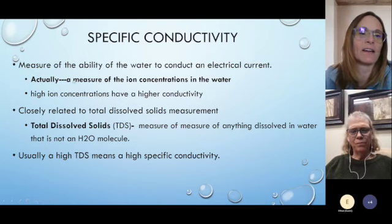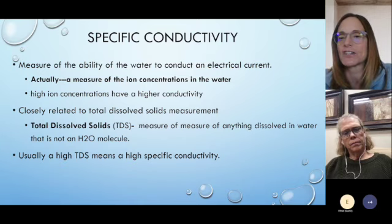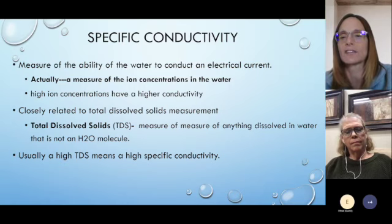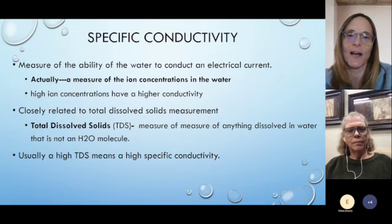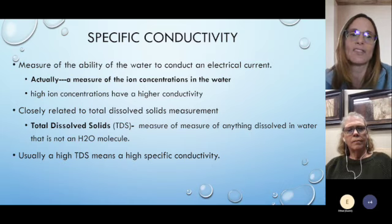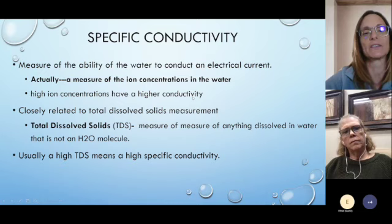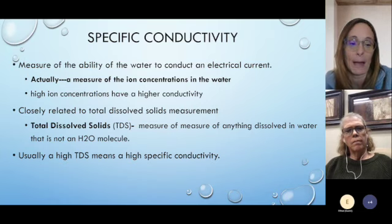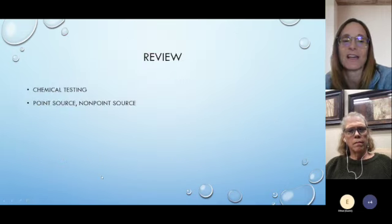Specific conductivity is a measure of the ability of water to conduct an electrical current — basically a measure of ion concentrations in the water. Pure water with just H₂O does not conduct an electrical current. It's when ions are dissolved in water that it gains the ability to conduct current. We do test for specific conductivity in our water monitoring, though it just tests whether there are ions in the water, not which specific ones. Conductivity is closely related to total dissolved solids, which measures anything in the water that's not a water molecule. A high total dissolved solids level will often mean a high specific conductivity.